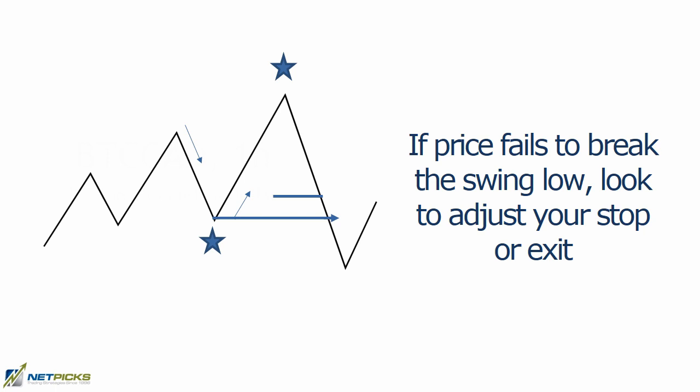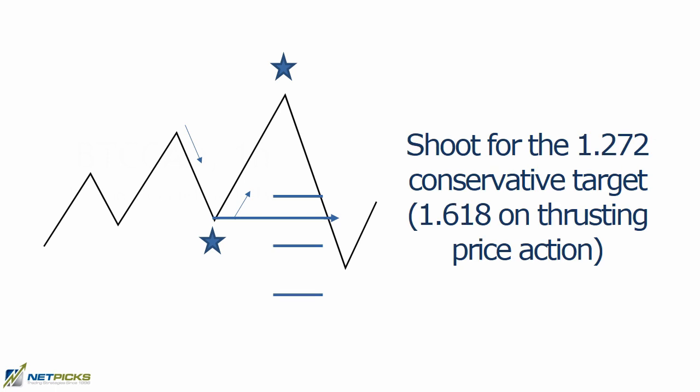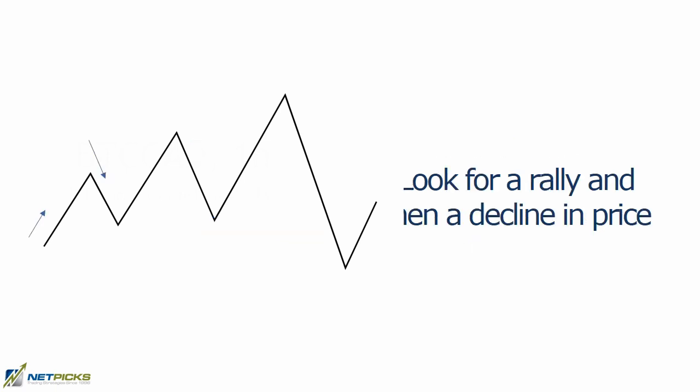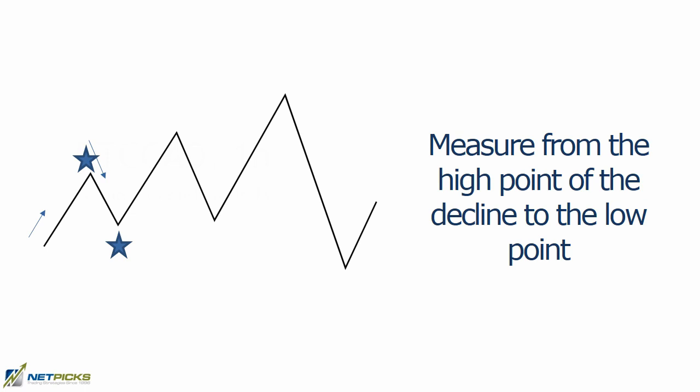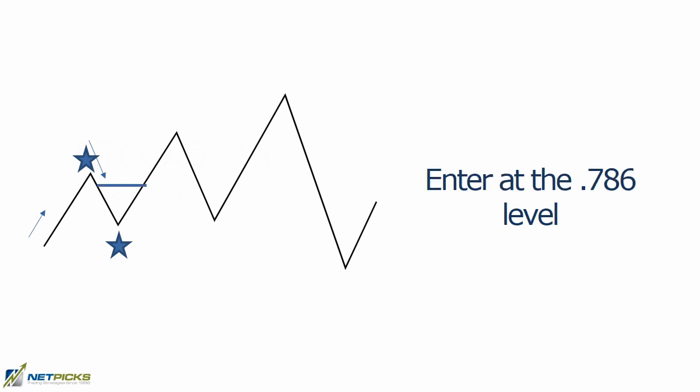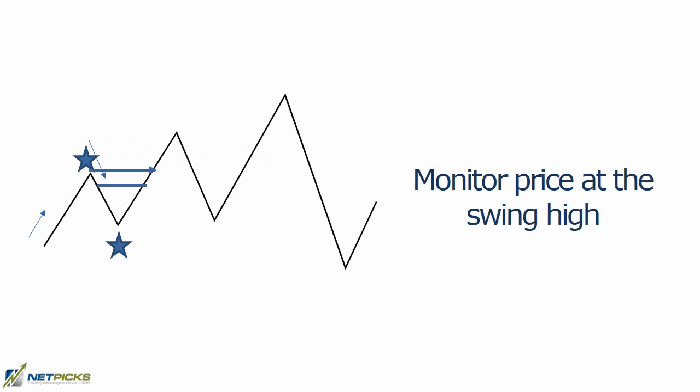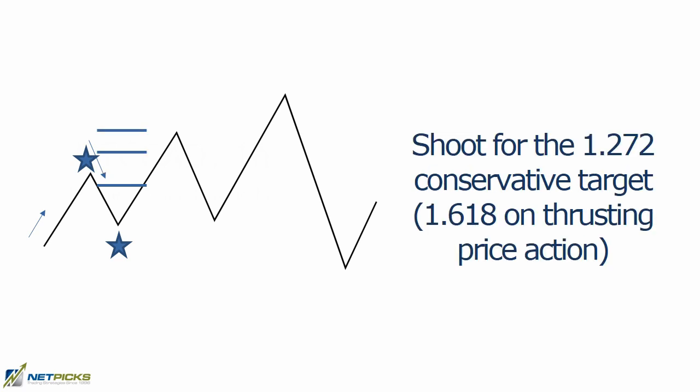We're going to shoot for the 1.272 target as the conservative target, but if we're seeing thrusting price action, we look at the 1.618. For buying, it's the exact opposite: we want a rally and then a decline in price. We measure from the high point of the decline to the low point, enter at the 0.786 level, monitor price at the swing high, and then shoot for the 1.272 target as the conservative level.